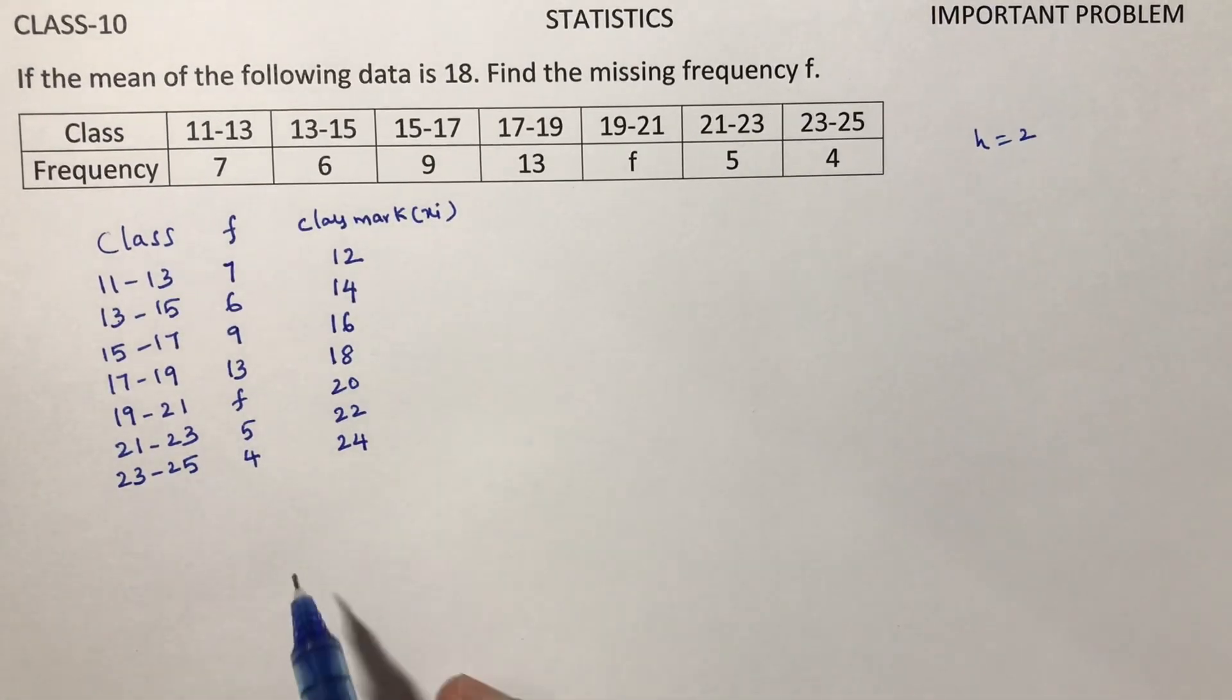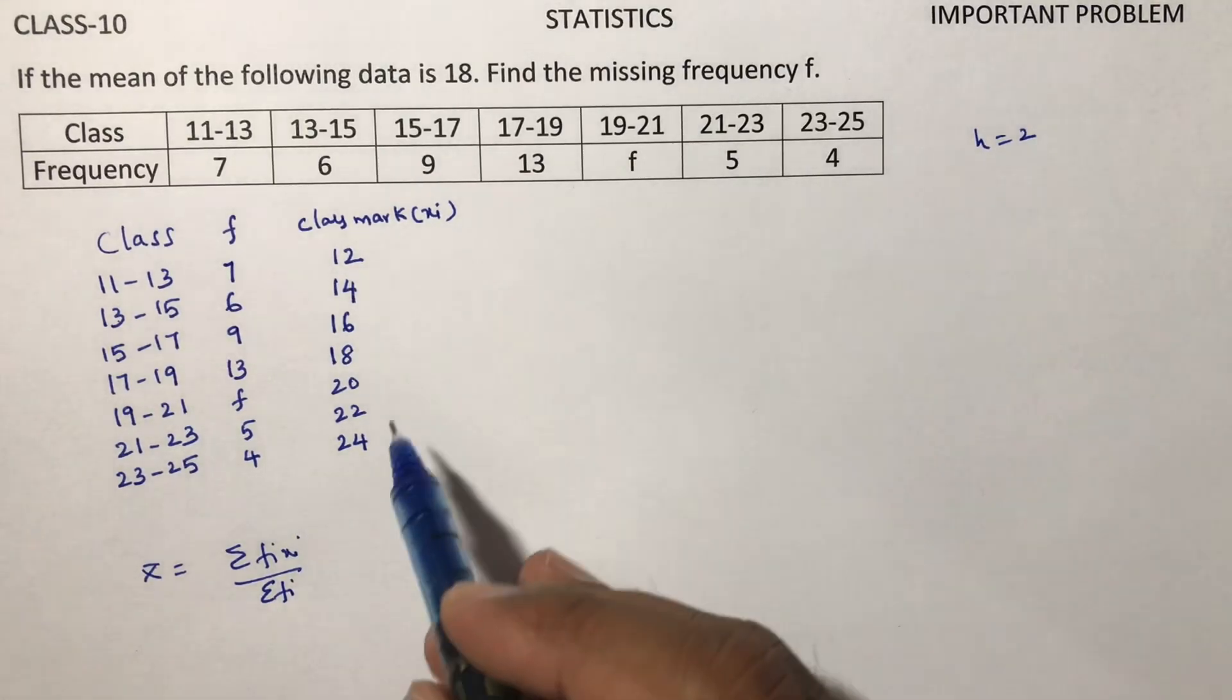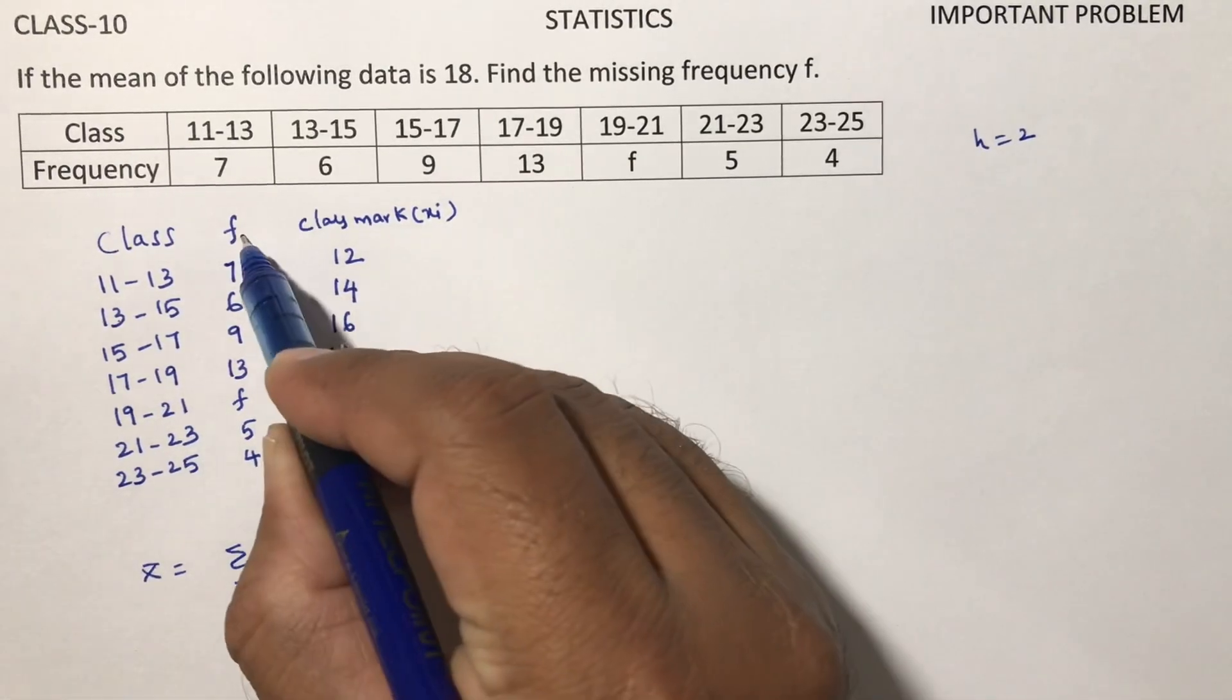If I solve this problem by direct method, the mean formula is sigma Fi Xi by sigma Fi. So here I need to calculate Fi Xi.